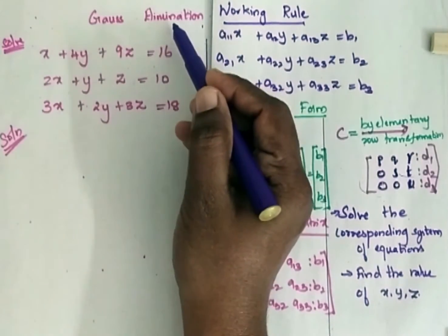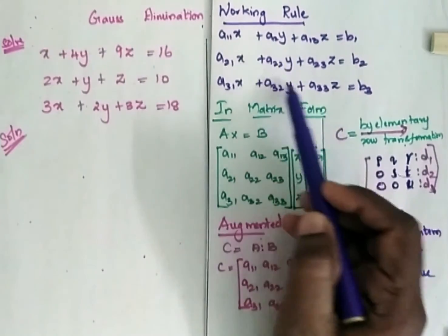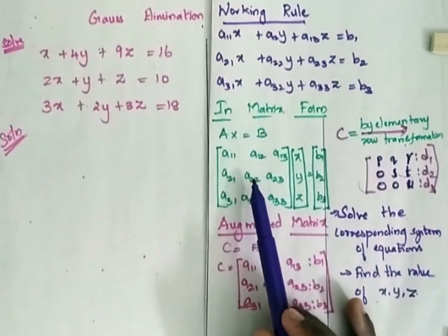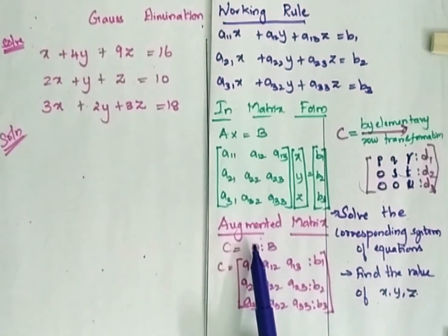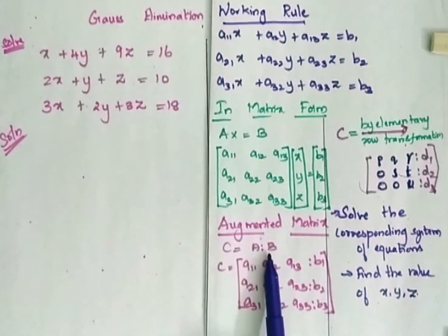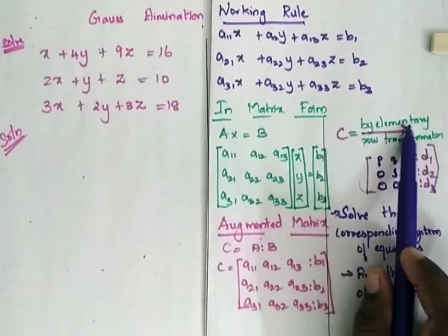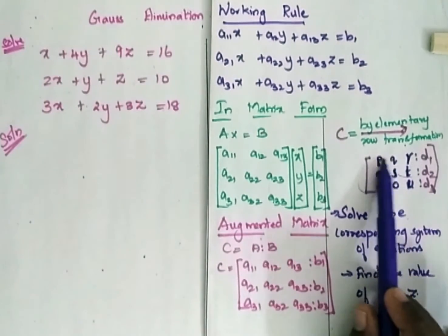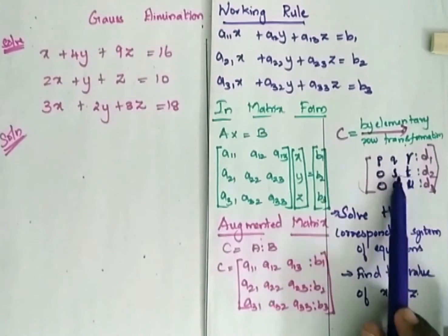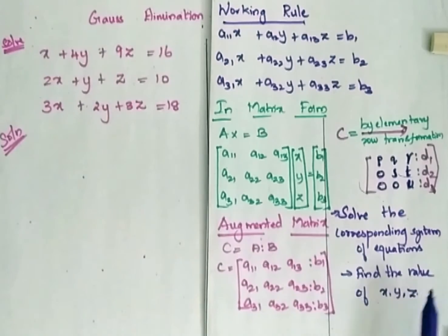Solve by Gauss elimination method. Let us see the working rule first. This is the system of equations that has been given. First, write the equation in matrix form, that is Ax is equal to B. Then go for the augmented matrix where C is equal to A augmented with B. Now this C has to be transformed to upper triangular format by elementary row transformation, such that you have zeros in the lower places. Now this system of equations is solved and the values of x, y, z are obtained.